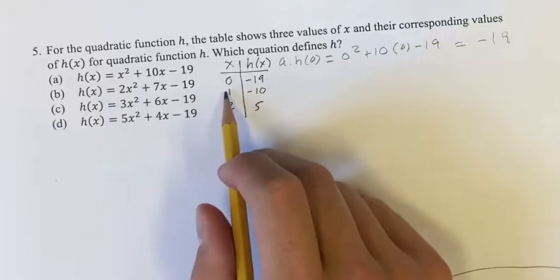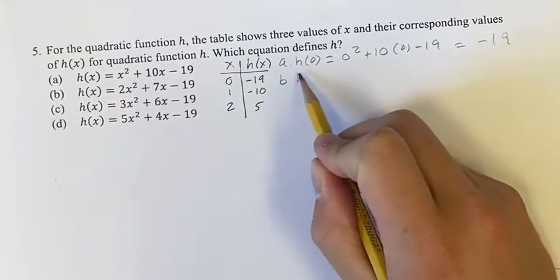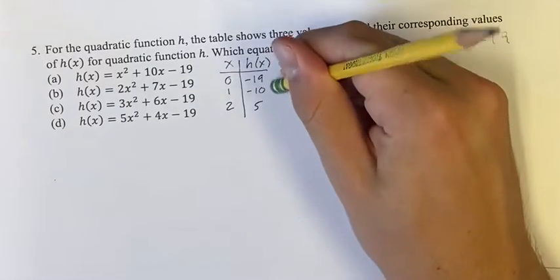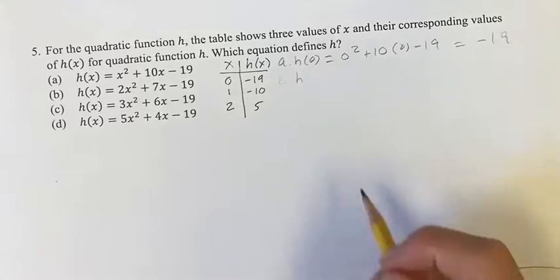If we go on to h(1) = -10, now we can start to narrow down our options. For this one, if we're checking for a, we have to make sure a works for all of them, b works for all of them, c works for all of them, and so on.